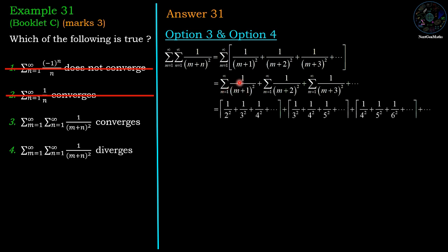After opening each inner summation: for m=1, the first term is 1/(1+1)^2 = 1/2^2; second term m=2 gives 1/3^2; third term m=3 gives 1/4^2, and so on. For the second summation (m=1), the first term is 1/(1+2)^2 = 1/3^2; second term 1/4^2, and so on. For the third summation, beginning with m=1 it starts at 1/4^2 + 1/5^2 + 1/6^2, and continues.